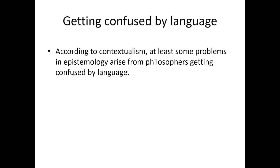Contextualism is a type of philosophical theory that, rather than trying to analyze the world, tries to analyze language. This is a view associated with Ludwig Wittgenstein, who thought that all philosophical problems were based on confusion about language - which is a bit extreme, but contextualism is of that sort. What we need is not a better understanding of the world but a better understanding of how language works.